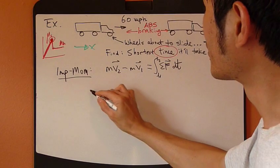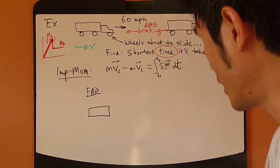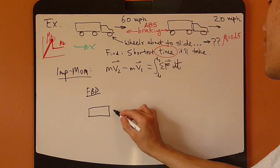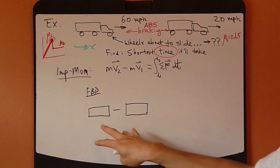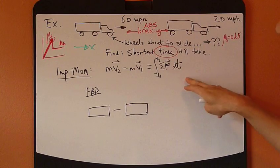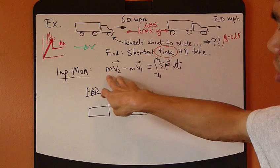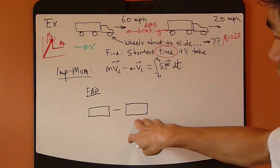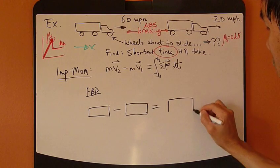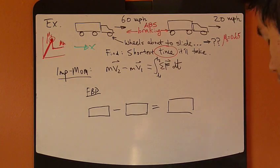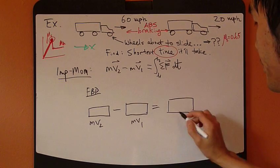Free body diagram of the truck. Just to simplify things, I'm going to draw just a box. I'm going to draw this free body diagram in such a way that it reflects this impulse momentum equation. So this truck for this term mV₂, and draw another rectangle for mV₁ equals right hand side. So to fill it out, I have mV₂, mV₁, equals.